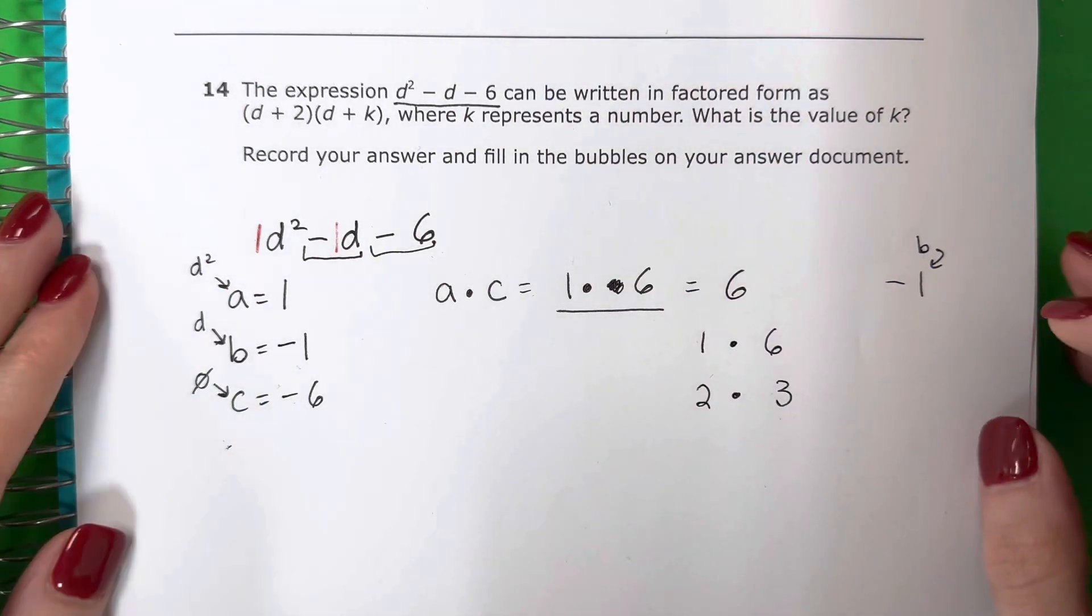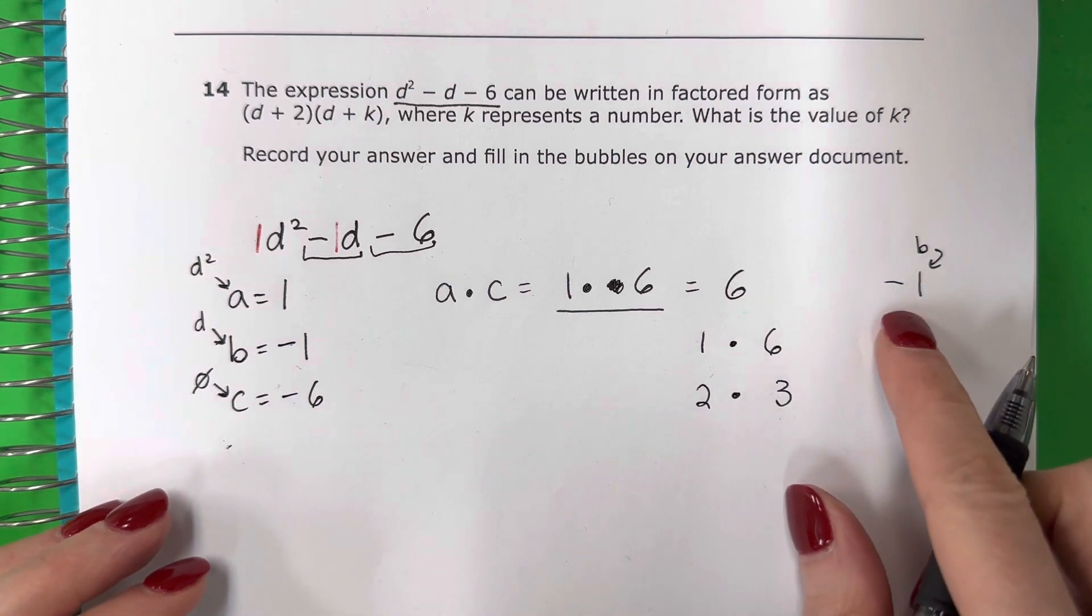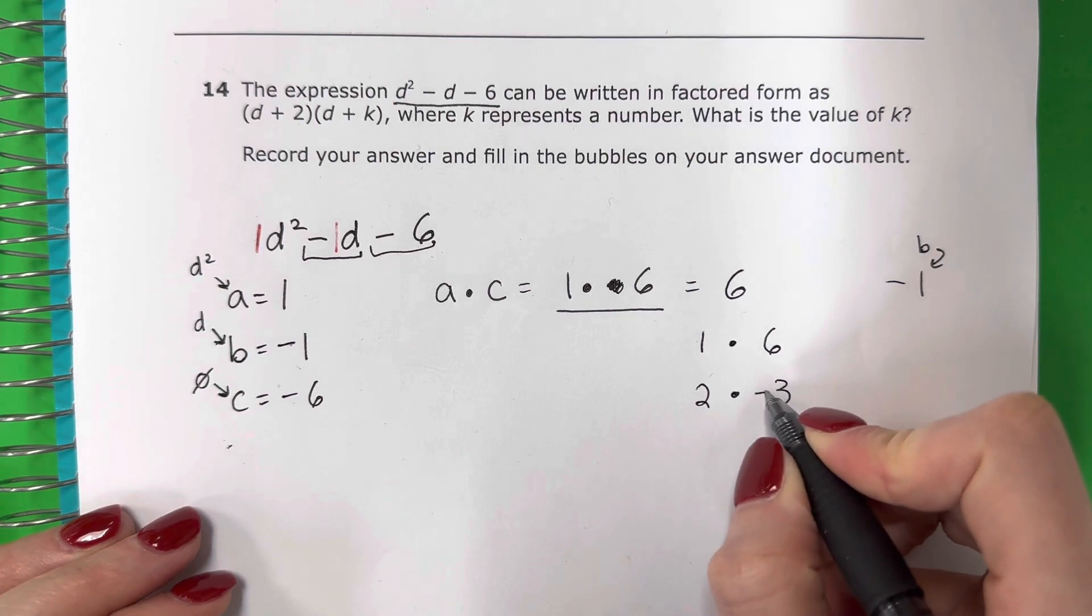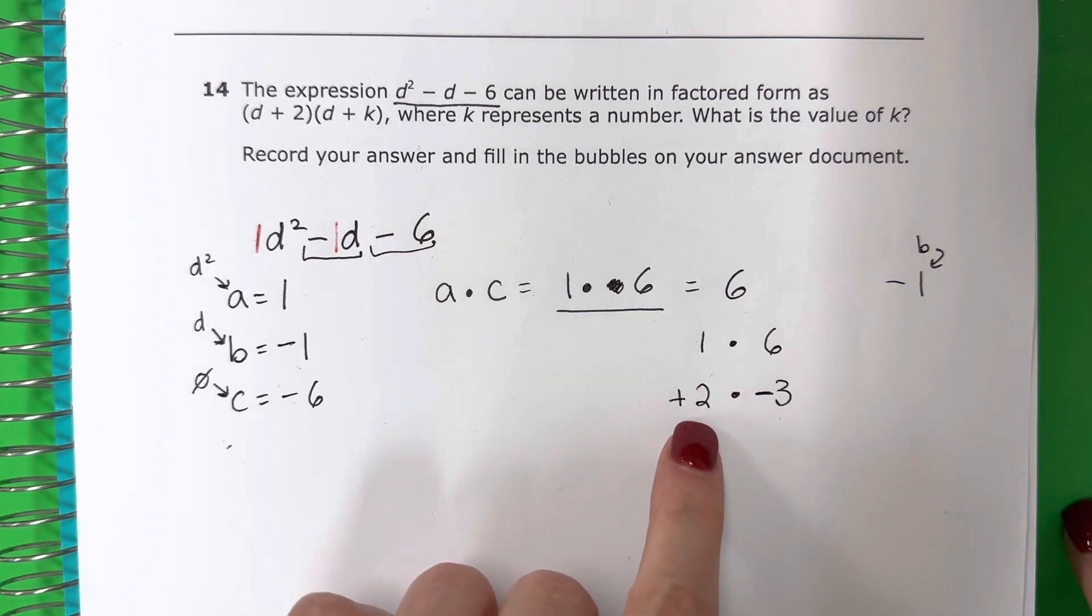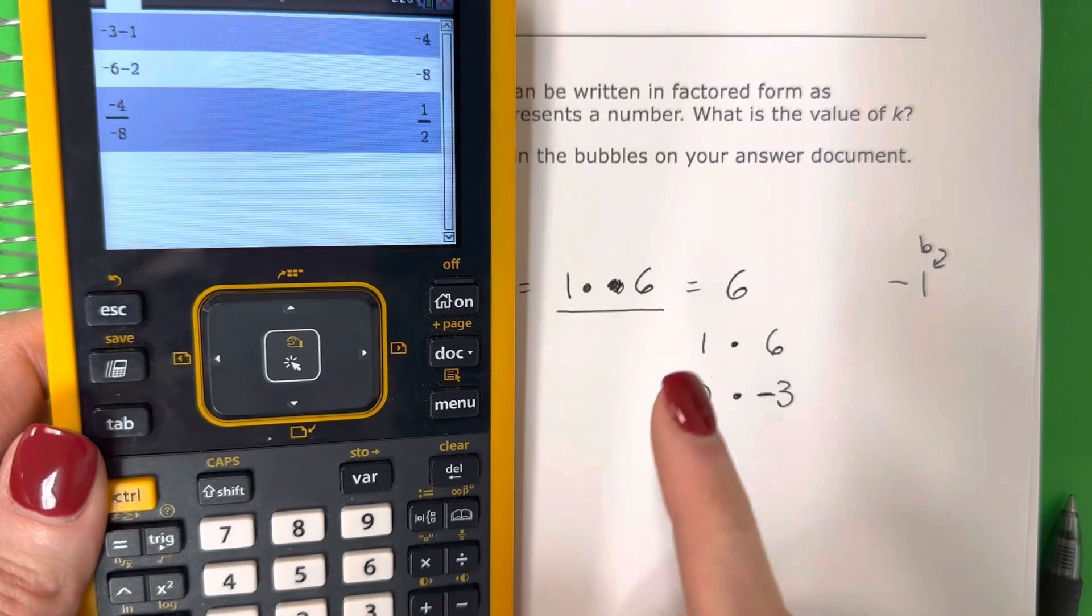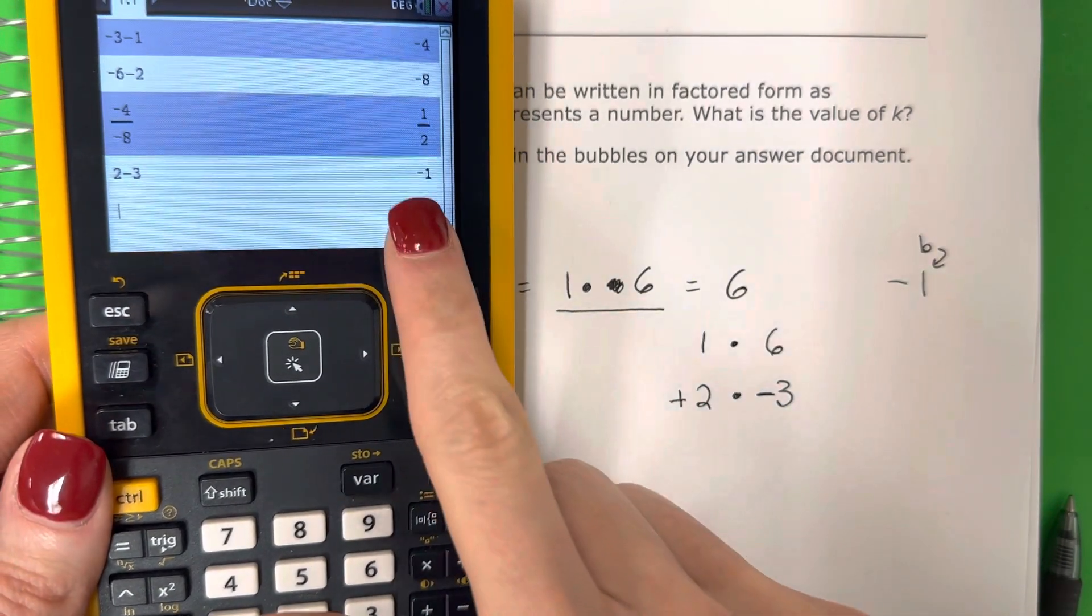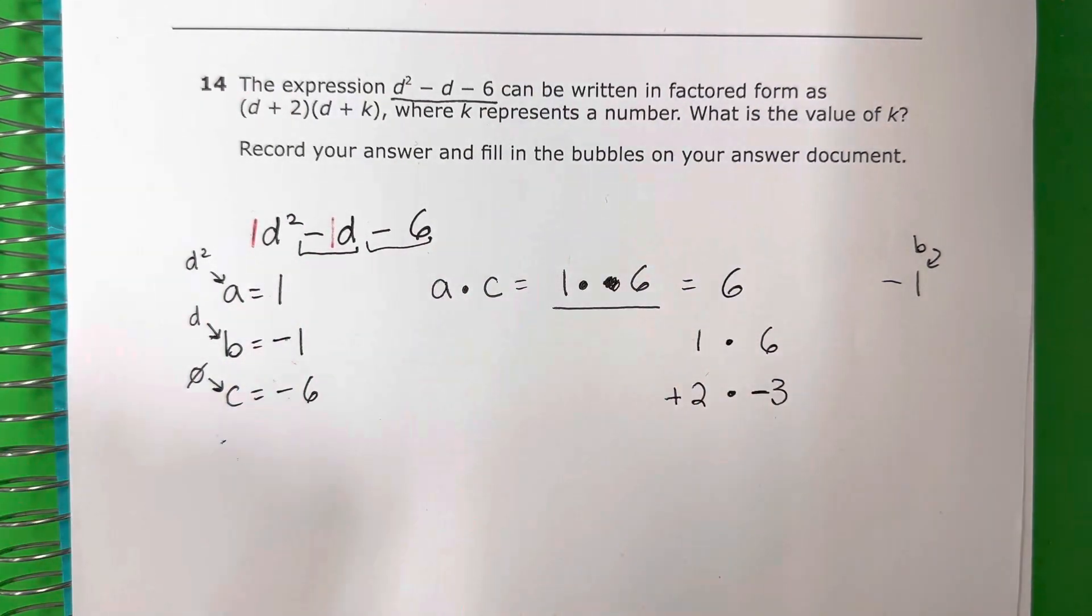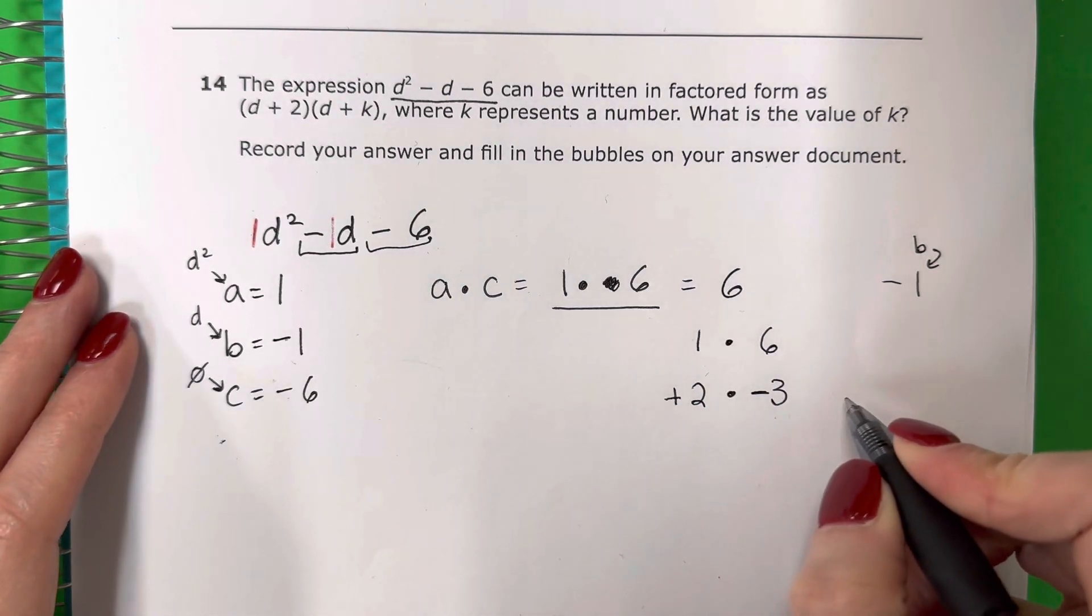So if you're good at math, si están buenos en matemáticas, you would know, saben, that to get negative 1, que para tener negativo 1, I will need to do negative 3 and positive 2, okay? So 2 minus 3, 2 menos 3. So let me show you that. Get your calculator. Positive 2 minus 3, that will get me negative 1. That's the only way to get negative 1 with these options. Es la única manera para tener negativo 1 con estas opciones. So that is negative 1.